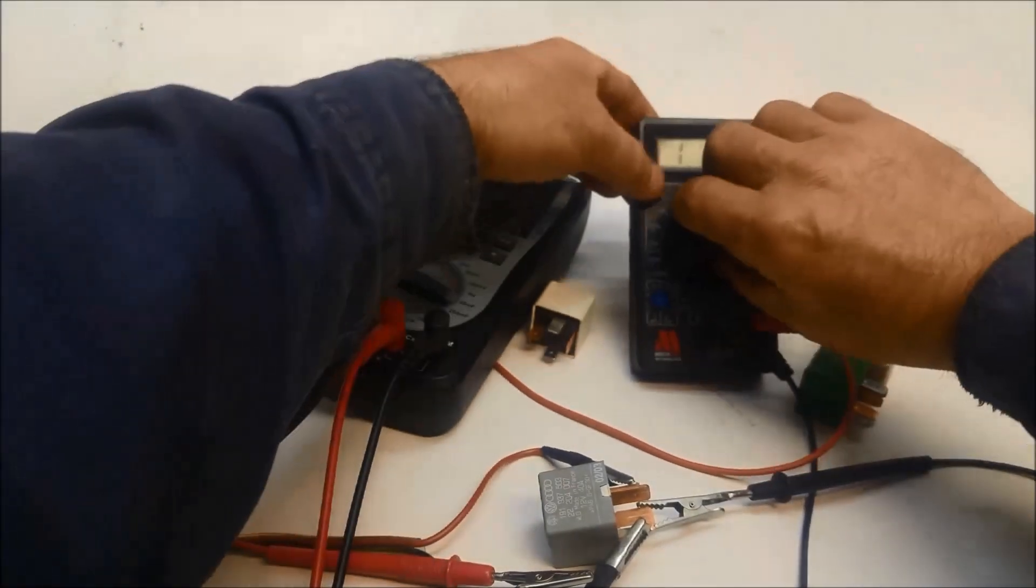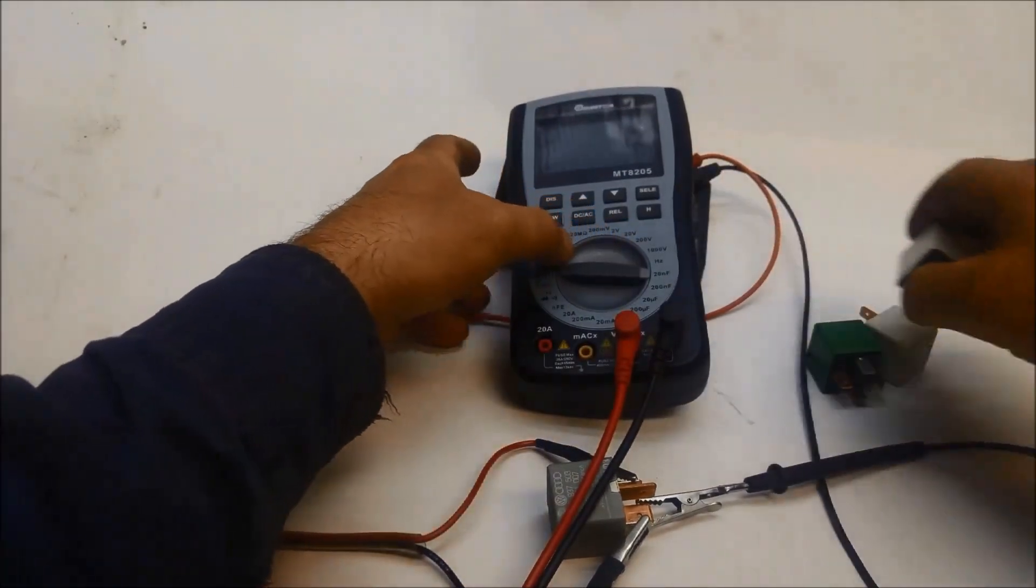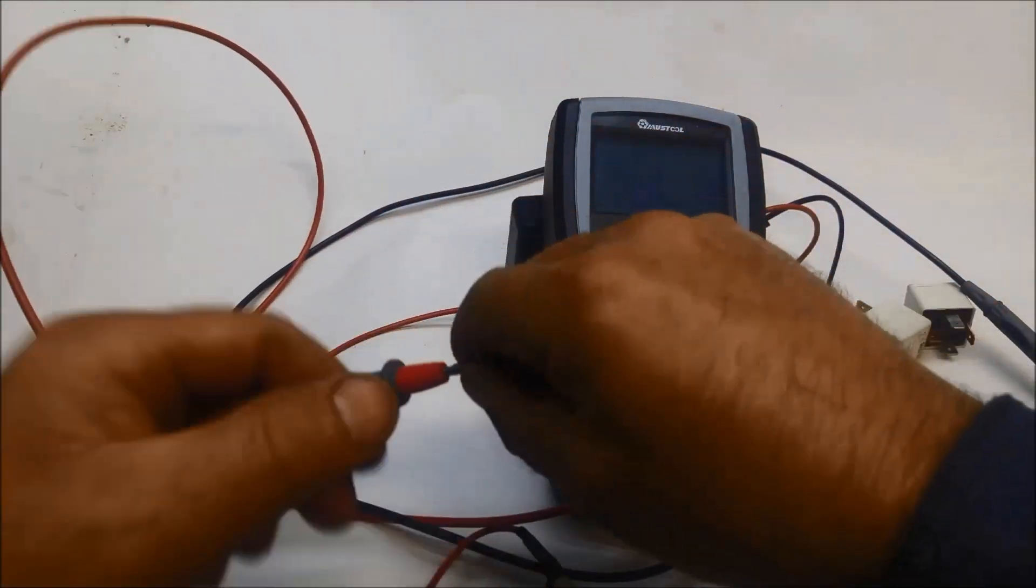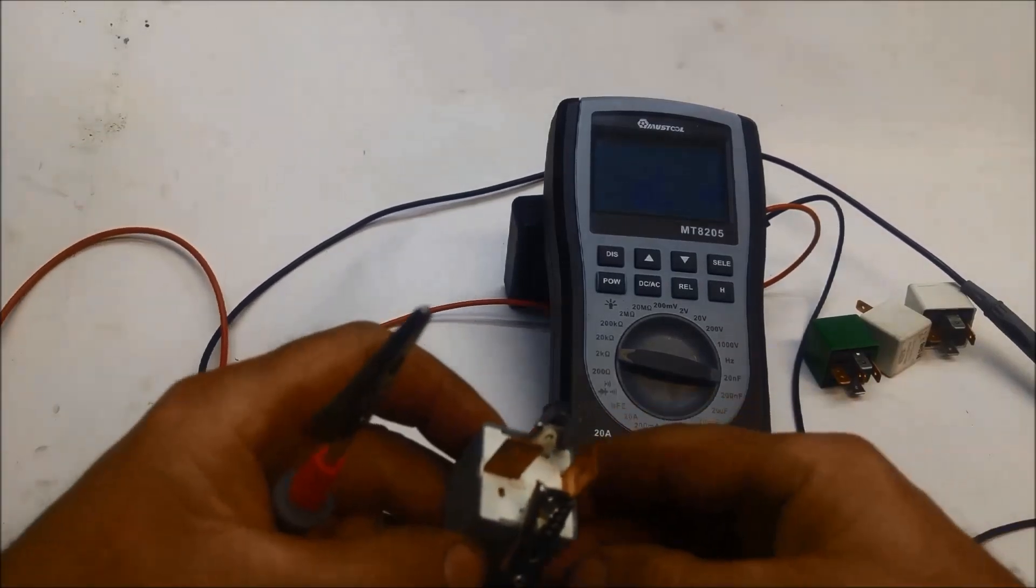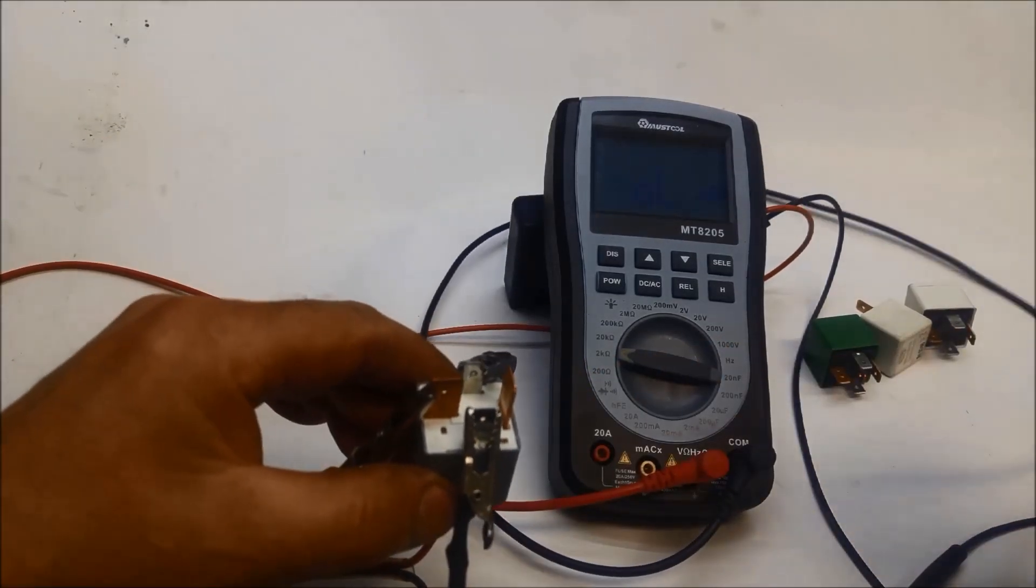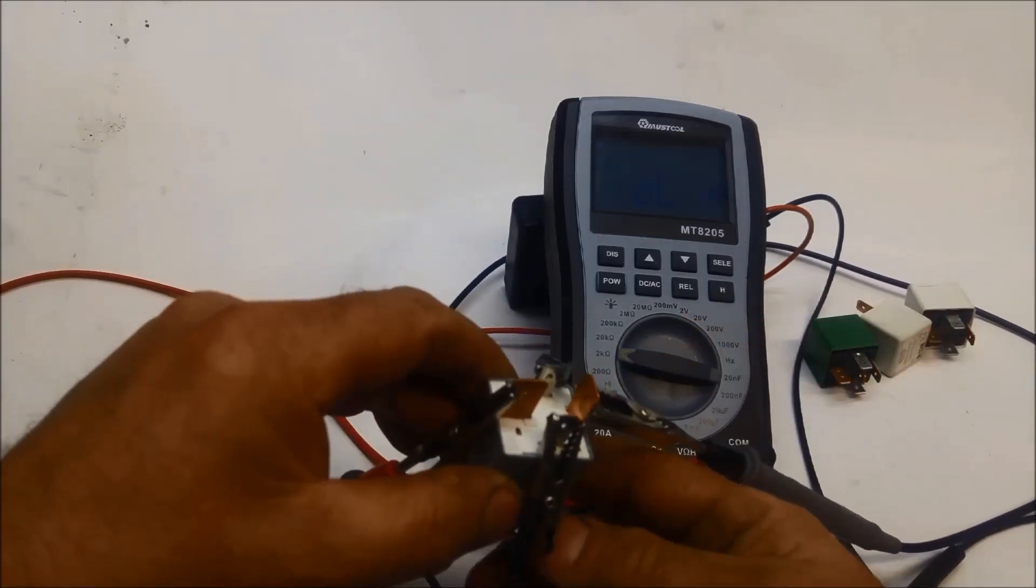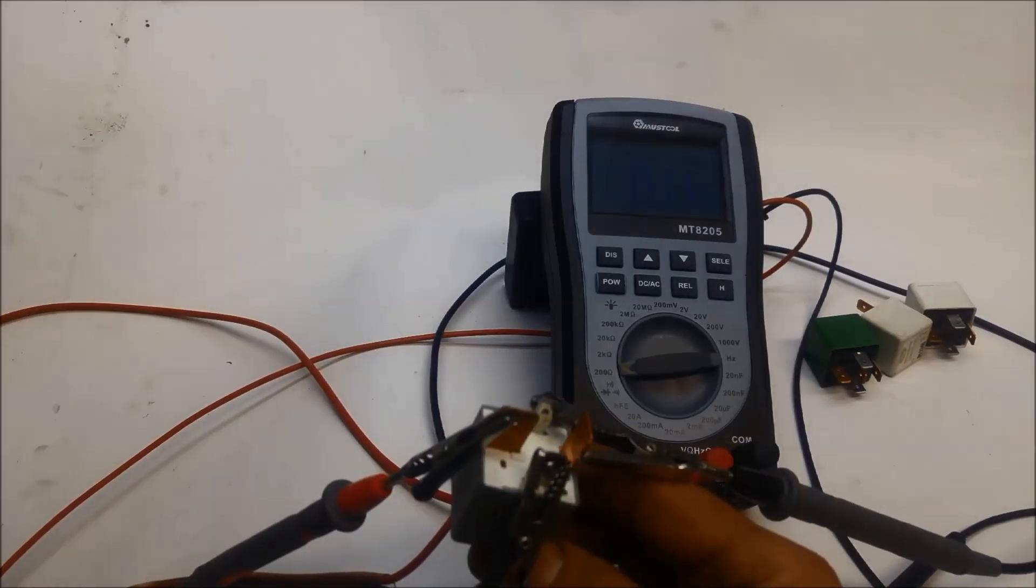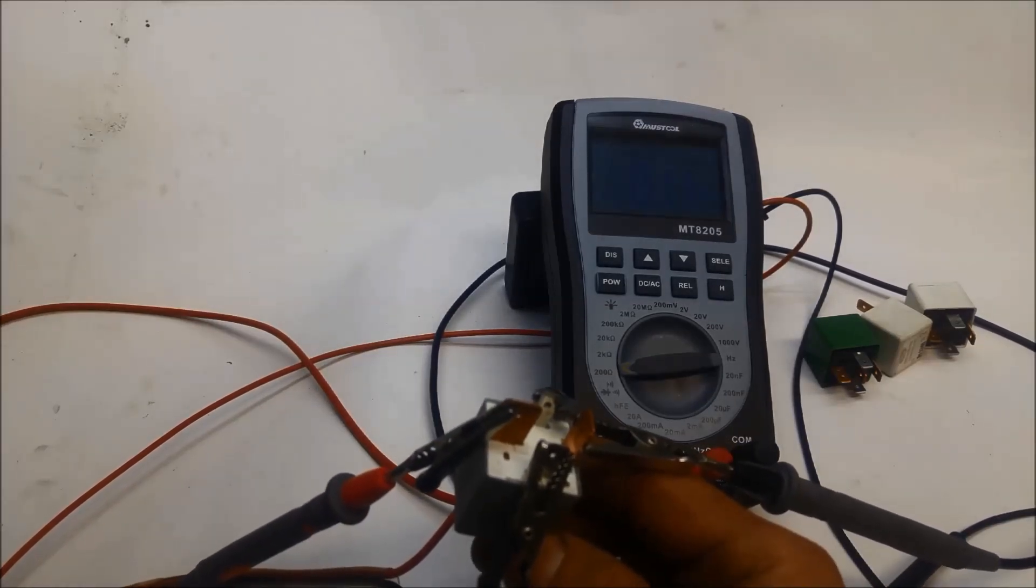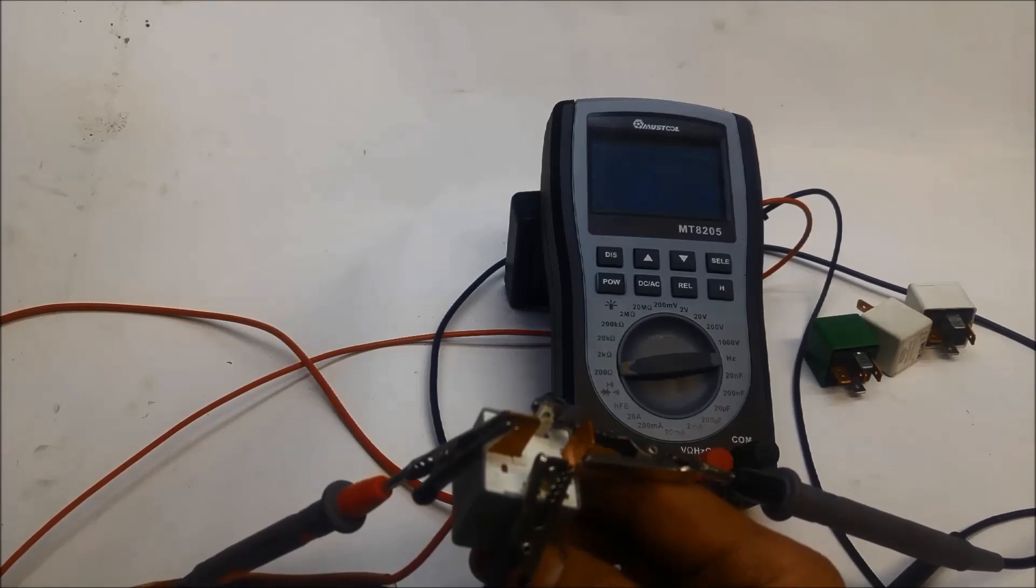I'll grab our other multimeter. Use that one as a stand. Positive of the multimeter on number 30. And now if I power it up, there's a fair bit of resistance there. It should be as close as it can be to zero, or no resistance.